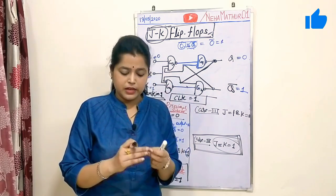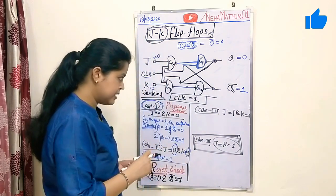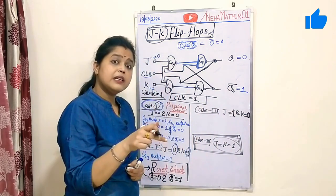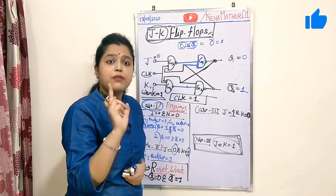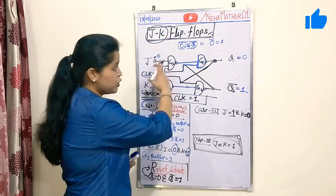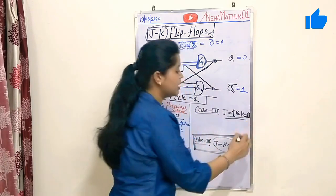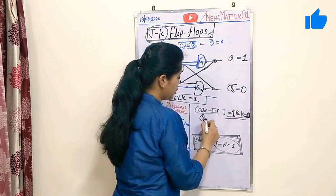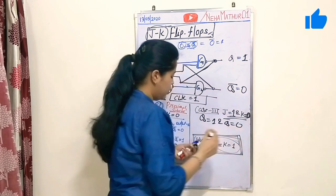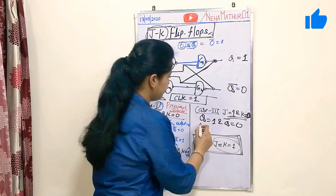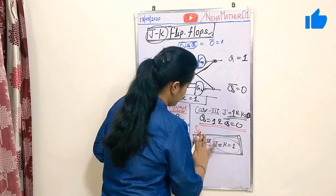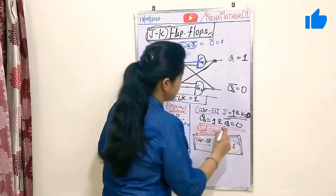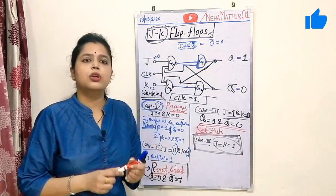Case 3: J=1 and K=0. For this case, the circuit defines itself in the set state, just like SR flip-flop. The execution of the steps for this input combination is similar to SR flip-flop, for which Q=1 and Q bar=0. So this combination produces the set state output.